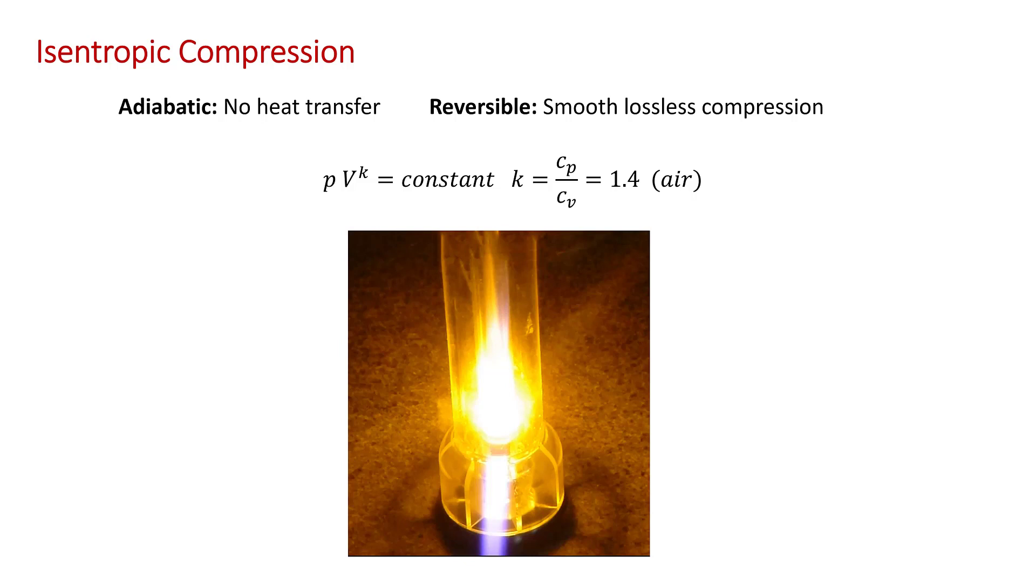For an isentropic process, pressure times volume raised to the power of k is a constant, where k is the ratio of the specific heats of the gas. Cp is the constant pressure specific heat, and Cv is the constant volume specific heat. For air, k equals 1.4.